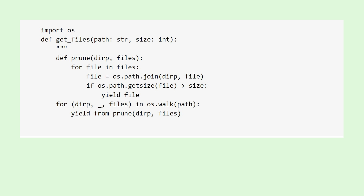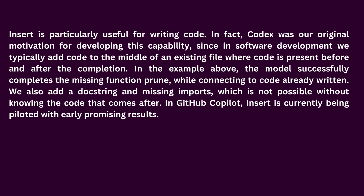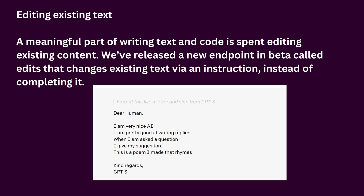Insert is particularly useful for writing code. In fact, Codex was the original motivation for developing this capability, since in software development we typically add code to the middle of an existing file, where code is present before and after the completion. In the example above, the model successfully completes the missing function 'prune', while connecting to code already written — also adding a doc string and missing imports, which is not possible without knowing the code that comes after. In GitHub Copilot, insert is currently being piloted with early promising results. The insert capability is available in the API today in beta, as part of the completions endpoint, and via a new interface in Playground. The capability can be used with the latest versions of GPT-3 and Codex — text-davinci-003 and code-davinci-002. Pricing is the same as previous versions of DaVinci.